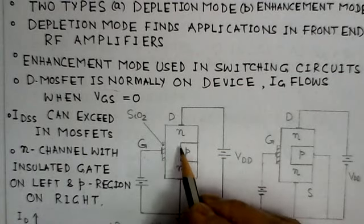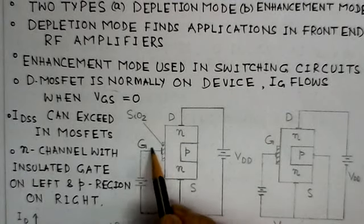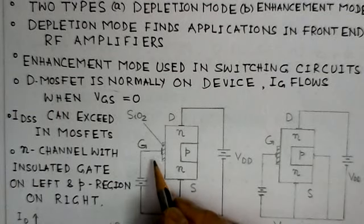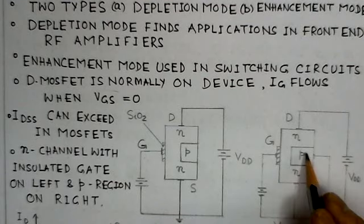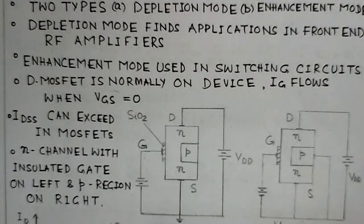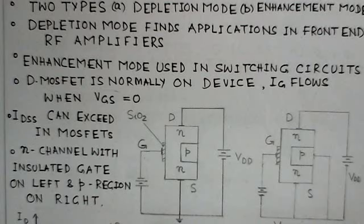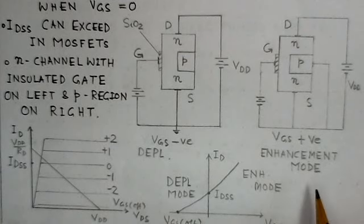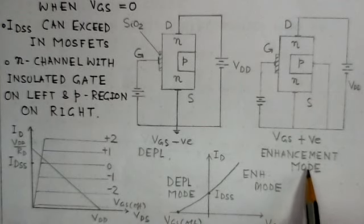This is an N-channel MOSFET where the P-region is doped into the N-channel, and the gate is insulated through an SiO2 layer. When gate-to-source voltage is negatively biased, the device works as a depletion mode MOSFET. When VGS is positive, it is working in enhancement mode.